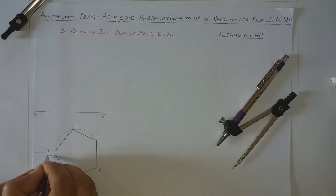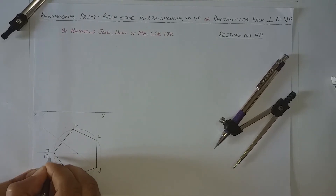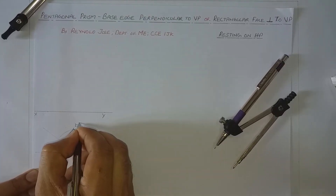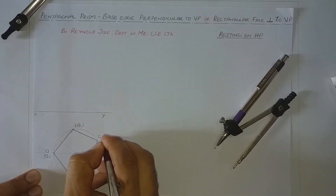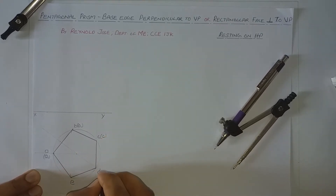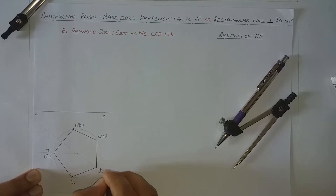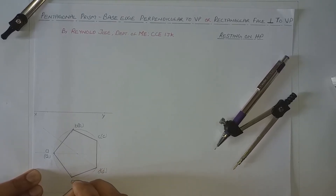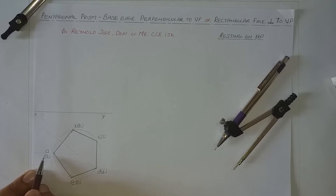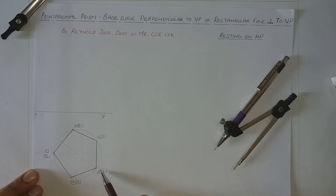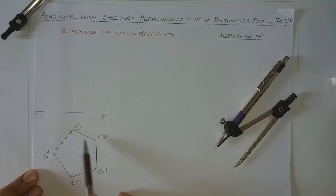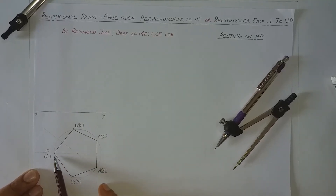All corners on the base will also be invisible, so let us name them a1, b1, c1, d1, and e1. The lateral edge AA1 — likewise we have five lateral edges: BB1, CC1, DD1, and EE1. All these lateral edges are visible as a single point in the top view because they are perpendicular to the base. This center point is the center of the corresponding prism.